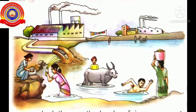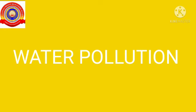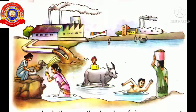Now you understand that not only air but also water is polluted. So what is water pollution? Impurities that mix with water make it dirty — this is called water pollution.